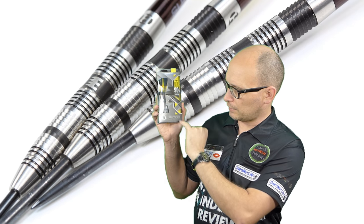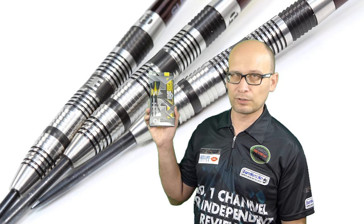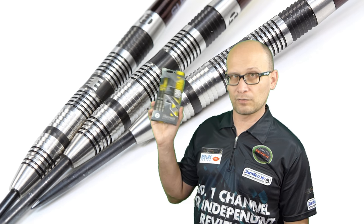As usual with the Harrows darts, they're very nicely machined and they've got a black nitride coating on them. Let's have a closer look.